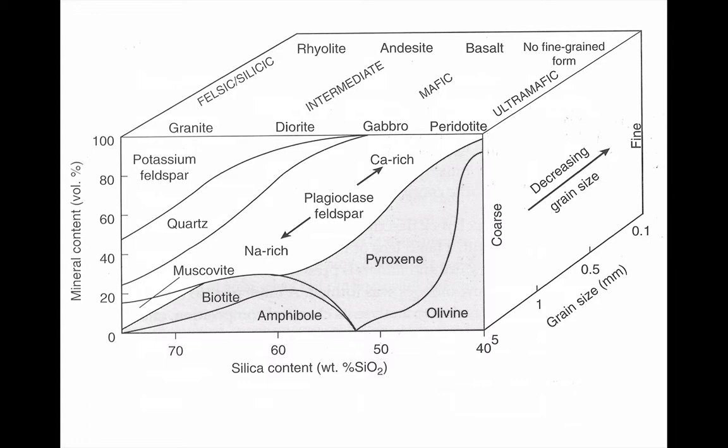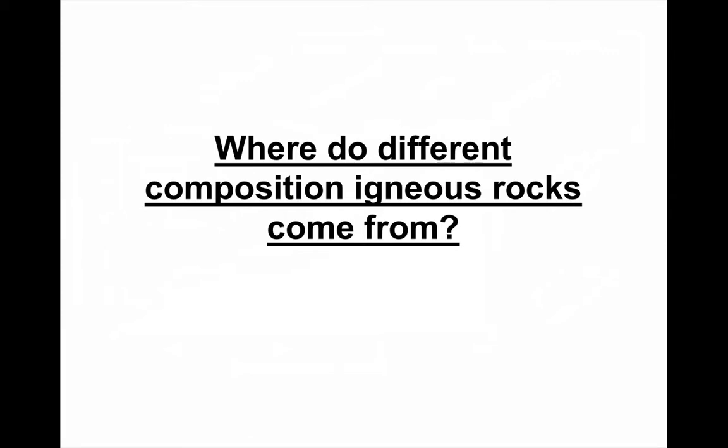We have already looked at a two-dimensional graph like this. So the question begs itself, where do these different composition of igneous rocks come from?